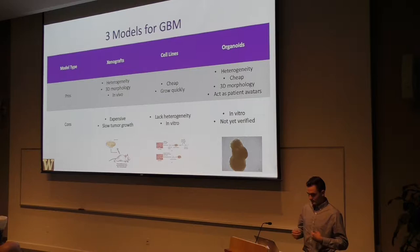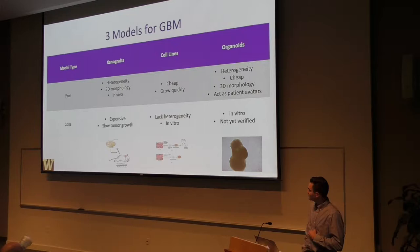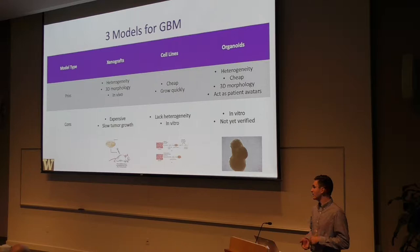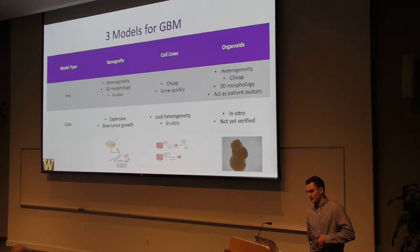The three models we have right now — there are really four. I didn't mention genetically modified mice. But the xenografts right now, we have cell lines and we have organoids. Organoids is the method my lab was working on. The pros of organoids are the heterogeneity you see in these — they have glial cells, neural stem cells, and neurons. They're cheap, they have a 3D morphology that models that of a developing brain, and they can act as a patient avatar. The cons are they're in vitro but not yet verified.